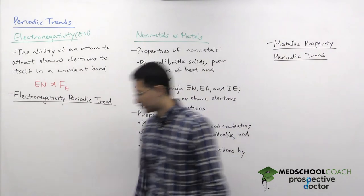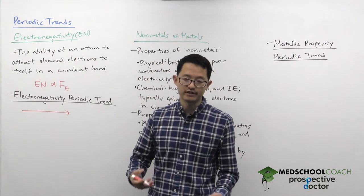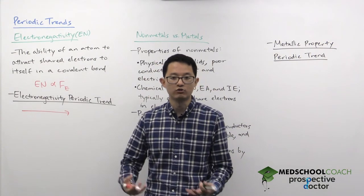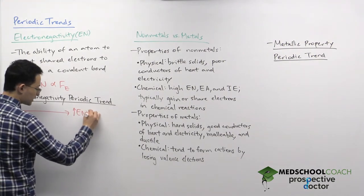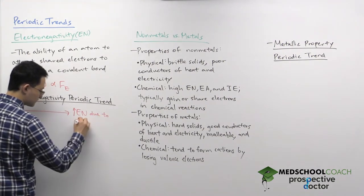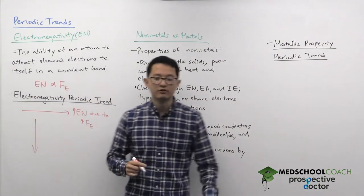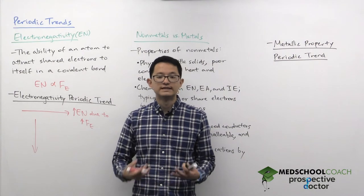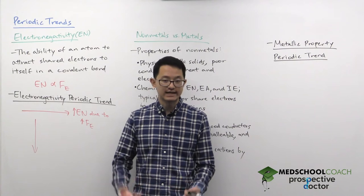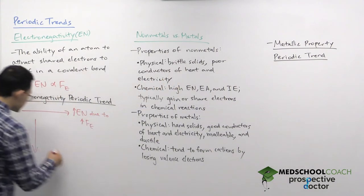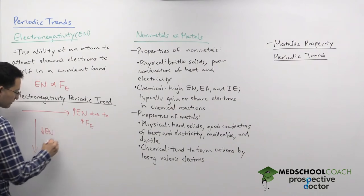In terms of the periodic trend, as you go from left to right across the periodic table, your nucleus is better at attracting and holding on to its valence electrons, which means you have an increase in electronegativity. If you go down a column on the periodic table, your electrostatic force decreases, your nucleus holds its valence electrons less tightly, so it is less able to attract valence electrons in a covalent bond.